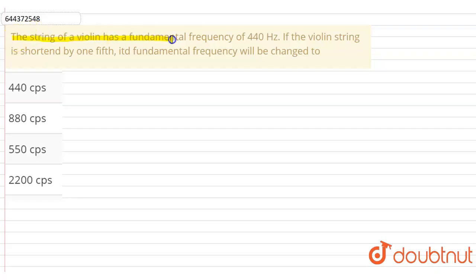The string of a violin has a fundamental frequency of 440 hertz. If the violin string is shortened by one-fifth, then its fundamental frequency will be changed to—so basically we have to find the fundamental frequency when length is shortened by one-fifth.